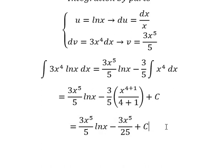Now we simplify, and we have the final answer: 3x to the power of 5 over 5 times ln x minus 3x to the power of 5 over 25 plus C. This is the end, thank you for watching.